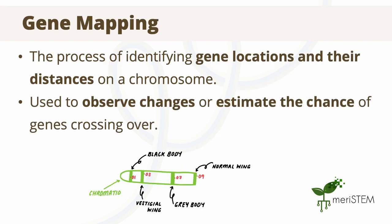So, how do we know which genes will cross over? Although crossing over occurs randomly, we can use a process called gene mapping to estimate how likely it is for genes to recombine. Gene mapping is the process of identifying locations of specific genes on chromosomes and their distances. The closer that the genes are to each other, the less likely they are to recombine, as there is a smaller distance between them for recombination to take place.